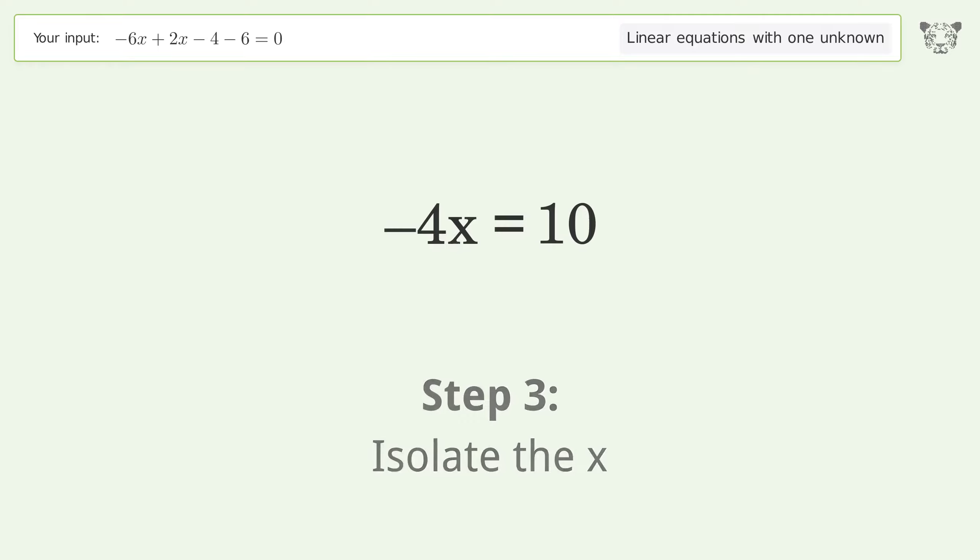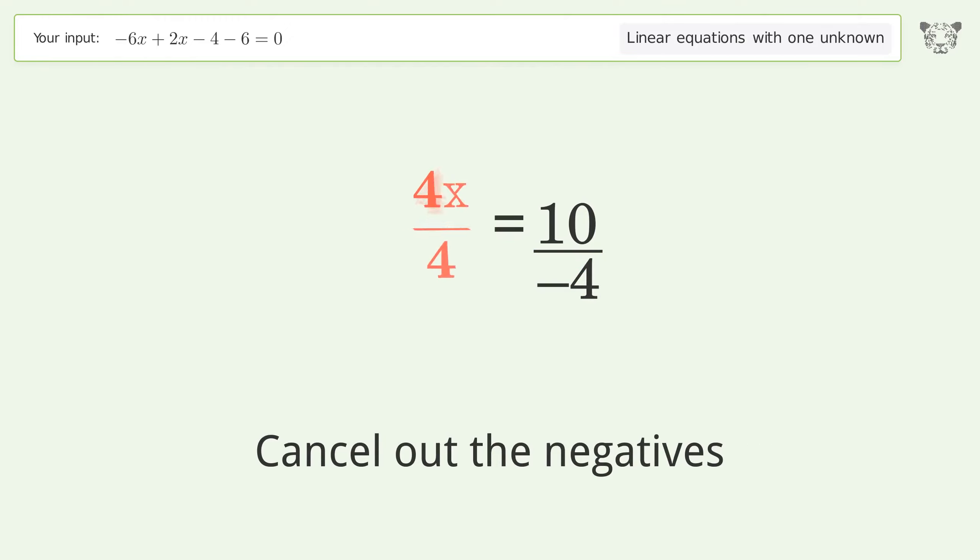Isolate the x by dividing both sides by negative 4. Cancel out the negatives. Simplify the fraction.